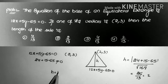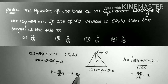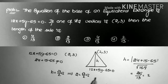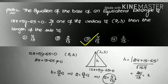Now what is the relation between the side of the equilateral triangle and height? H = (√3/2) × a. Since H = 2, we get 2 = (√3/2) × a, so a = 4/√3. That is the third option.